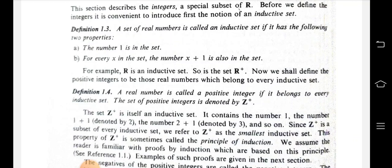The set of positive integers, denoted Z+, is itself an inductive set. It contains the number 1, the number 1 plus 1 denoted by 2, the number 2 plus 1, and so on — both properties are satisfied. We refer to Z+ as the smallest inductive set. This property of Z+ is sometimes called the principle of induction.